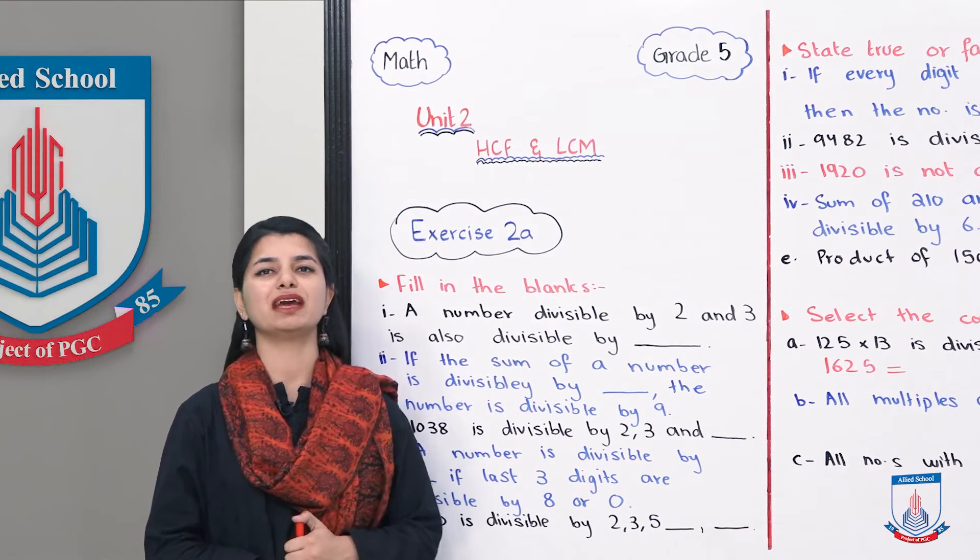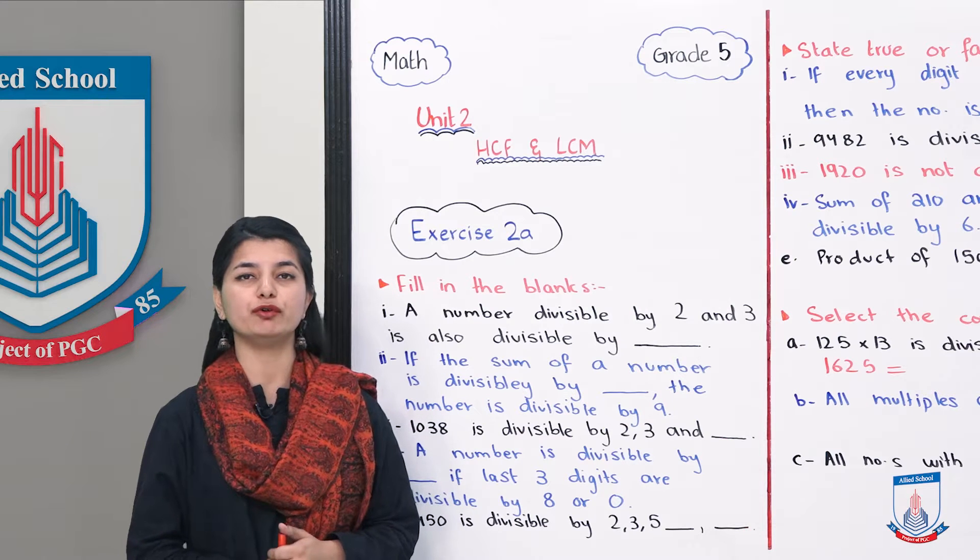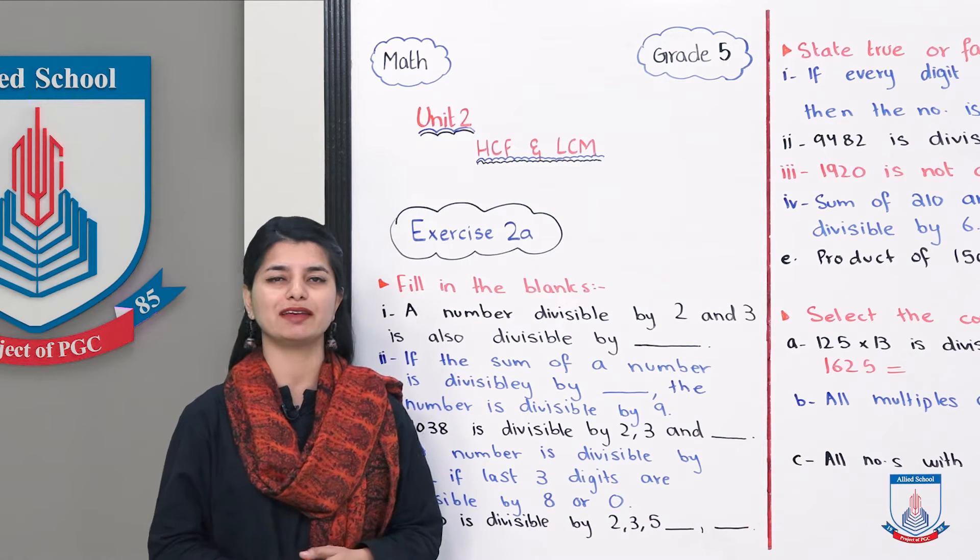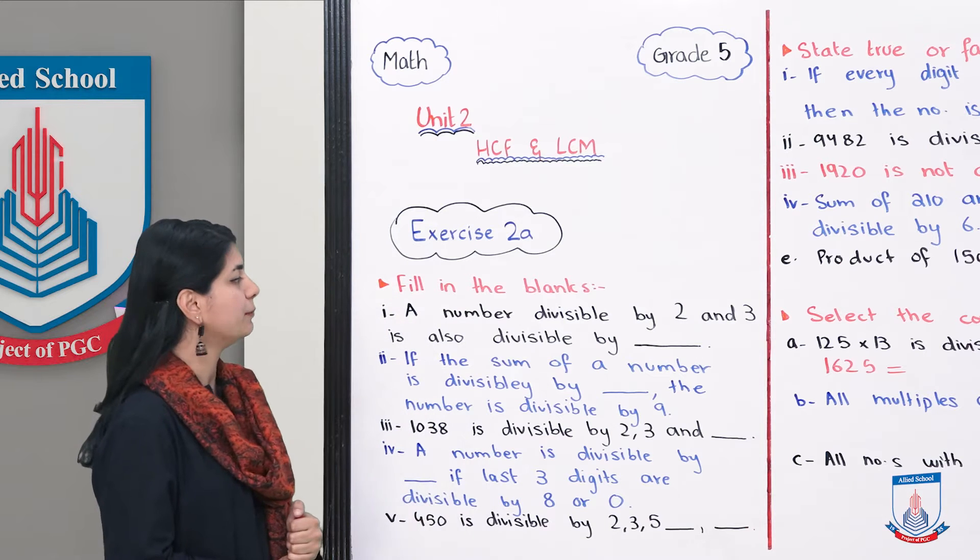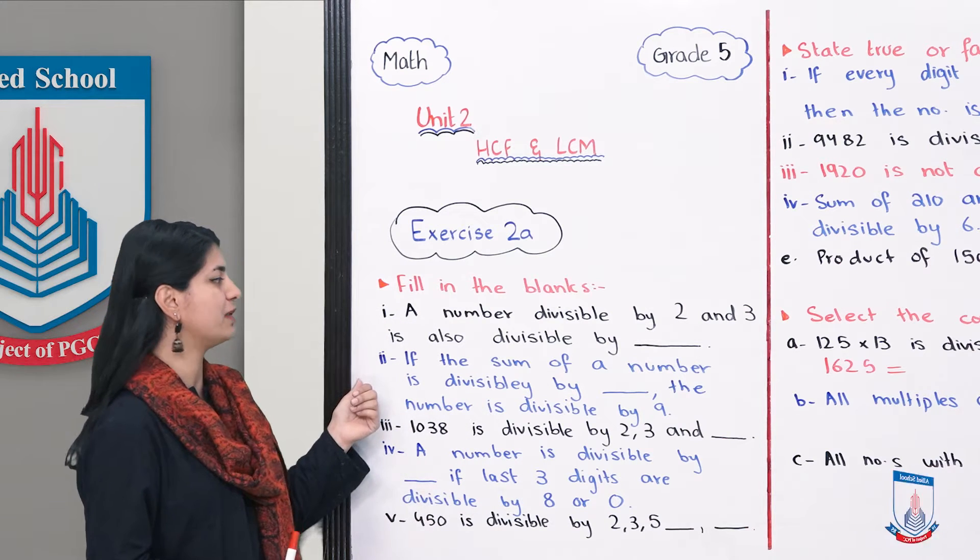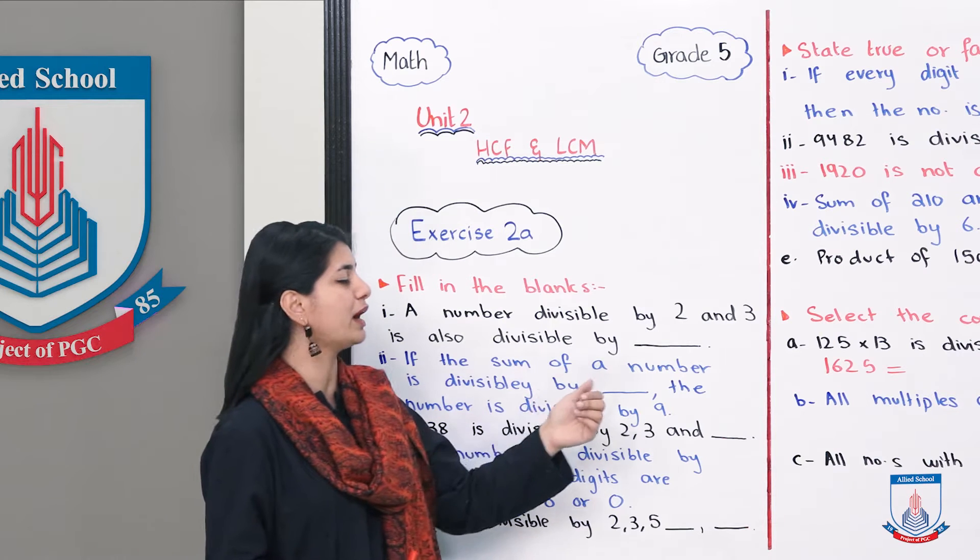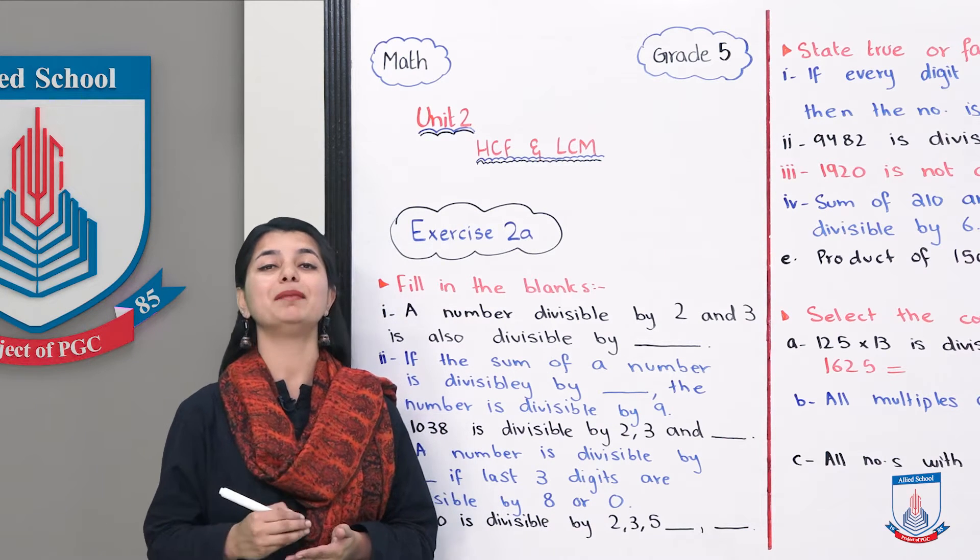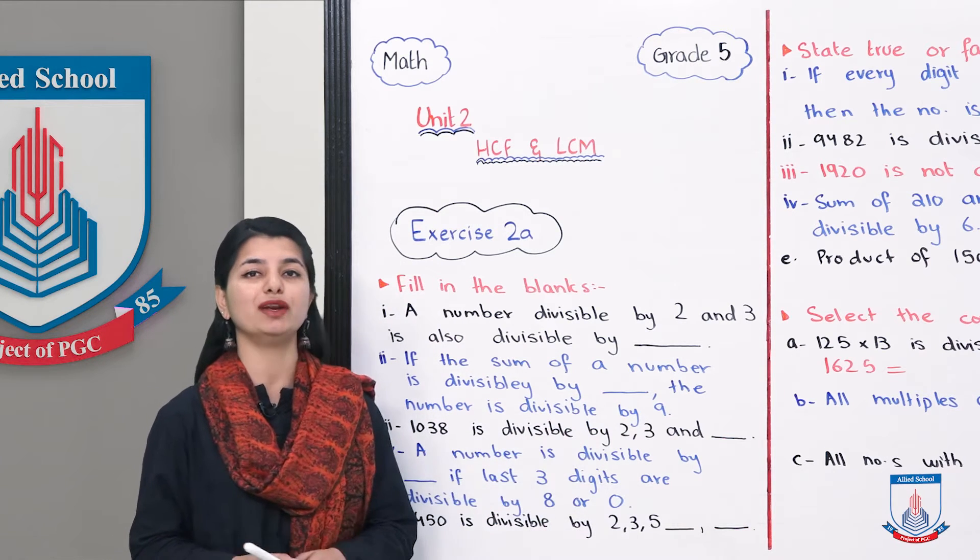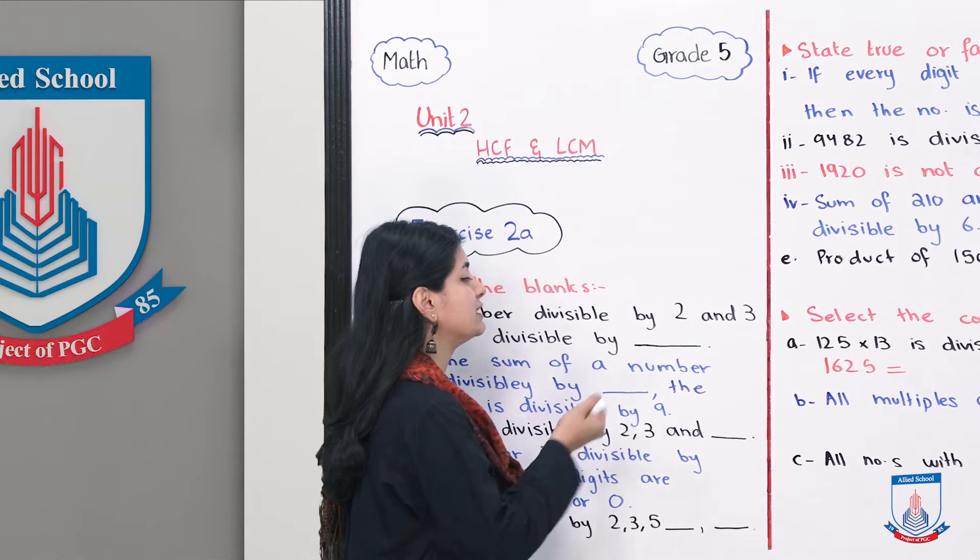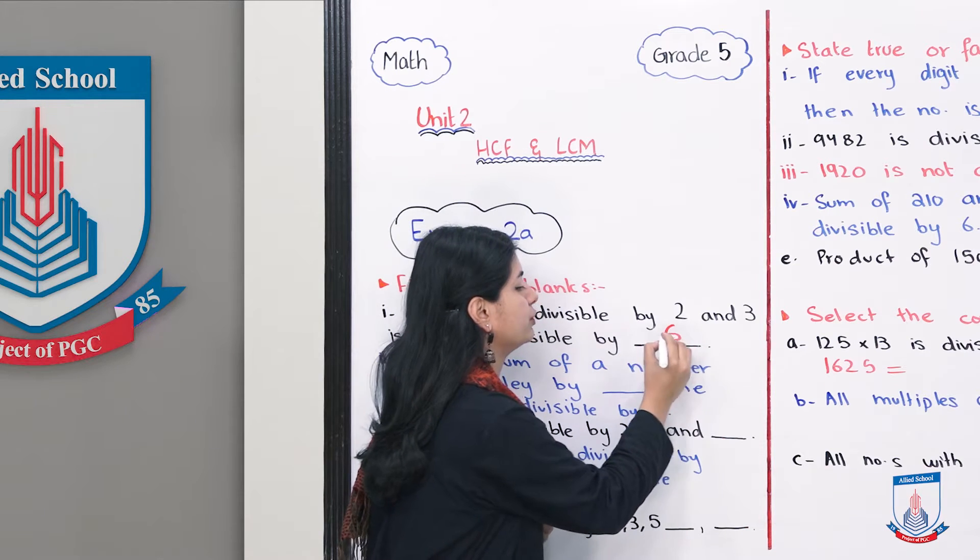In Exercise 2a, we have learned about the rules of divisibility and we have to answer questions. So first of all, fill in the blanks. First blank is: a number divisible by 2 and 3 is also divisible by. Now we know from divisibility rules that the number divided by 2 and 3 will be divided by 6. So what is the answer? The answer is 6.